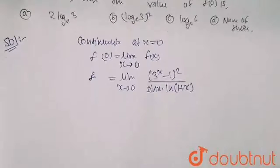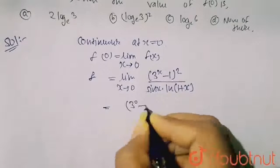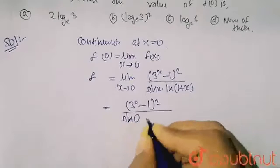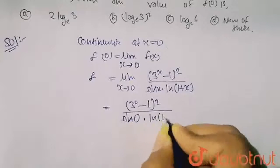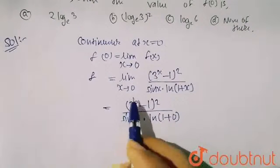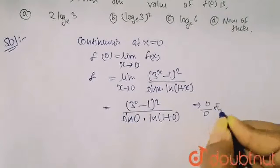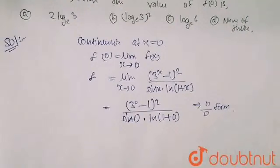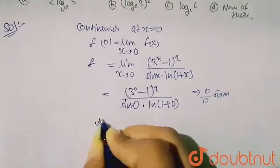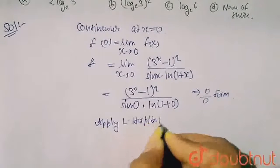Now apply the limit here. When I apply the limit, I get (3^0 - 1)² upon sin 0 · ln(1 + 0). This term becomes 0 and 1 minus 1 is also 0, so it is coming in 0 by 0 form. Whenever 0 by 0 form comes, we have to apply L'Hôpital's rule.